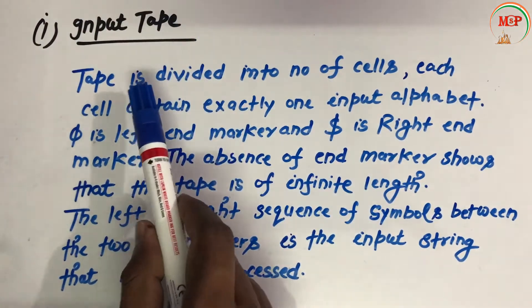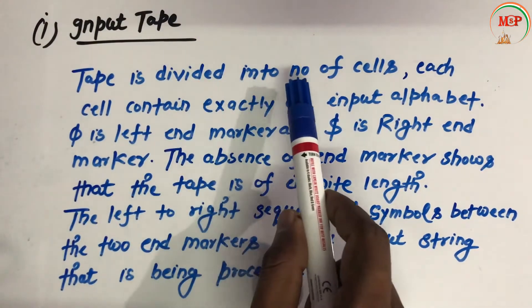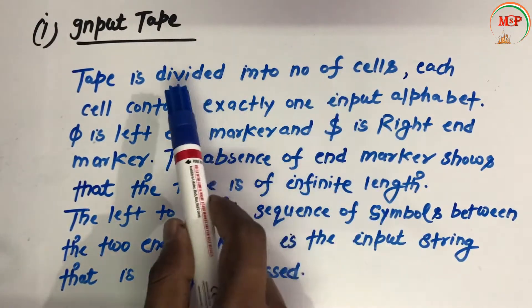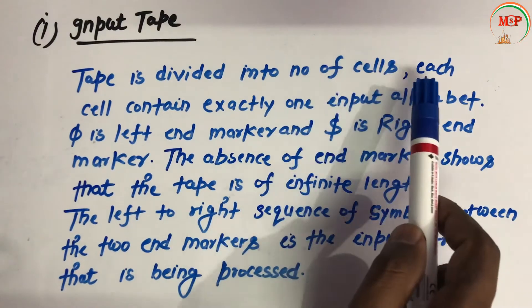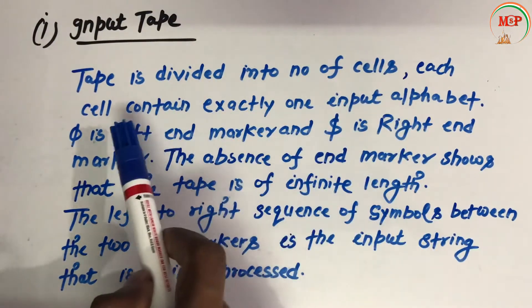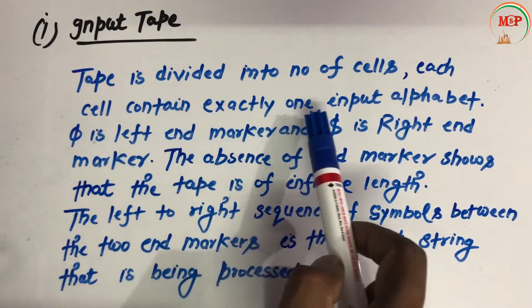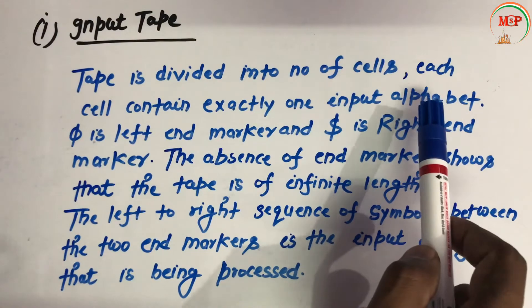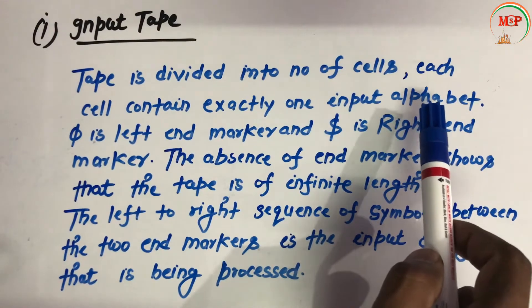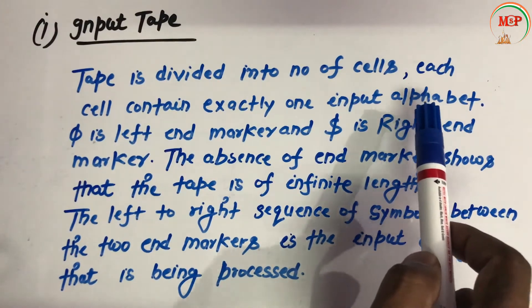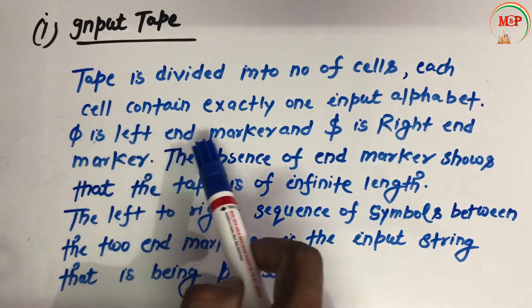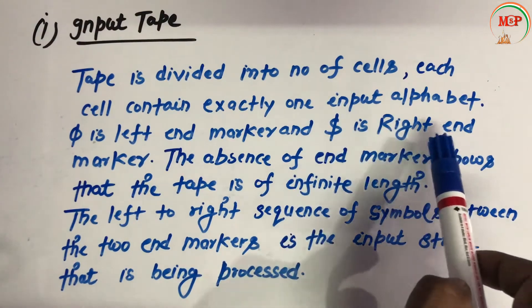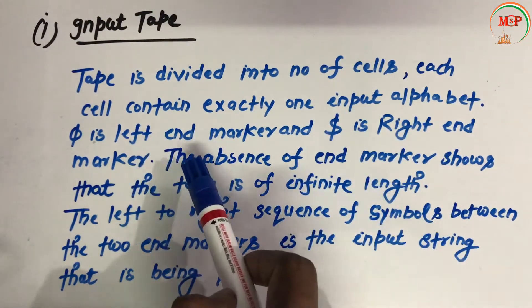Now let's see the first definition — input tape. The tape is divided into a number of cells. Each cell contains exactly one input alphabet.